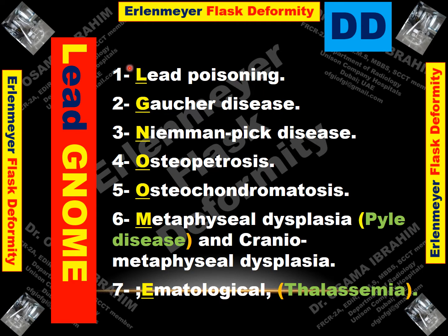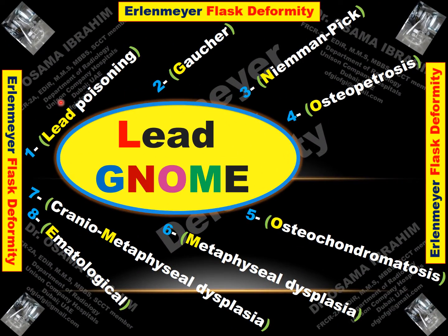What is the differential diagnosis of Erlenmeyer flask deformity? We can remember the mnemonic word LEAD GENOME. L from lead poisoning, E from Erlenmeyer — wait — G from Gaucher disease, E from... O from osteopetrosis and osteochondromatosis, M from metaphyseal dysplasia like Pyle disease and cranium metaphyseal dysplasia when associated with cranial nerve palsy, and E from hematological causes like thalassemia major or other blood diseases.